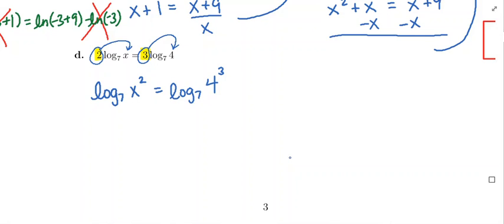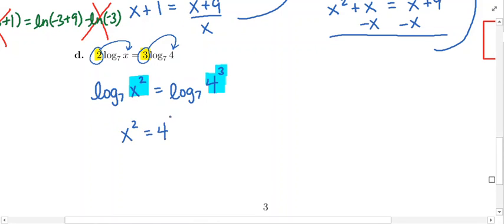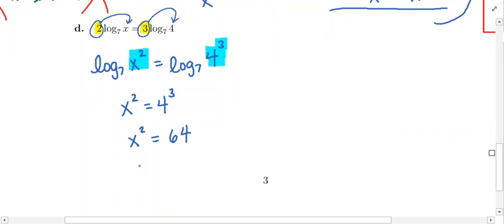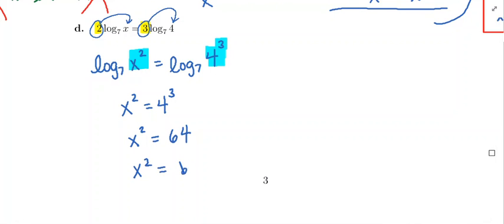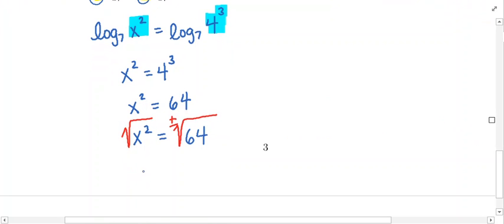We have one single logarithm on either side. The only way a log base 7 of something equals a log base 7 of something else is if the somethings are equal. So x squared has to equal 4 cubed. We can figure out that 4 cubed is 64. Now we solve for x: something squared equals a number, so we take the square root of both sides and put a plus or minus out front. The square root of 64 is 8, so x can be plus or minus 8.